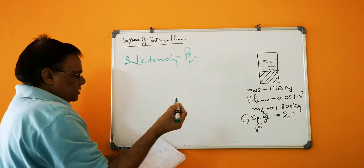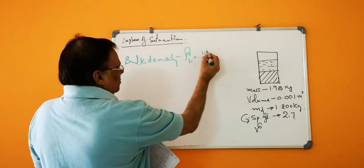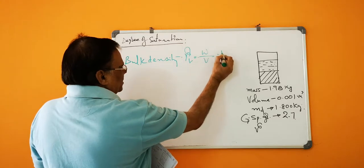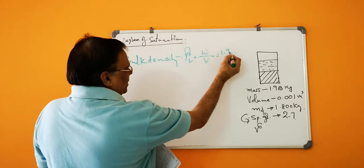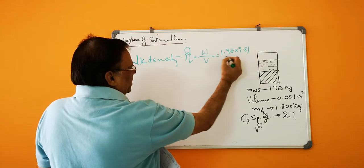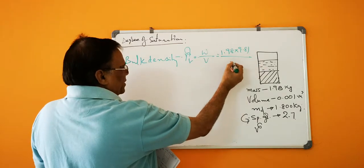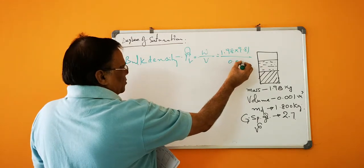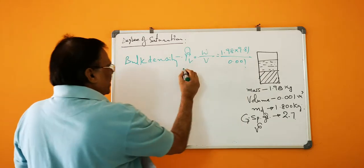So bulk density is equal to, gamma bulk is equal to weight by volume, that is 1.98 into 9.81 divided by volume is 1.8.